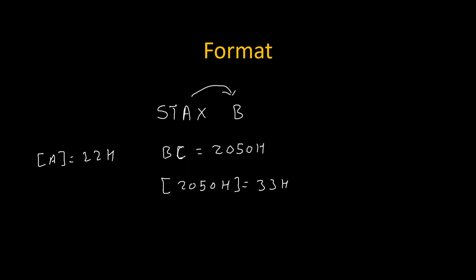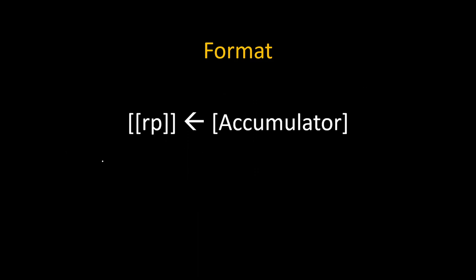So what will happen: the value of the accumulator, which is 22h, will get copied to the content of the content of the BC register pair. The content of BC register pair is 2050h, and the content of content of BC register pair is 33h. Because of this instruction, the content of the accumulator will get copied to the content of content of the register pair.